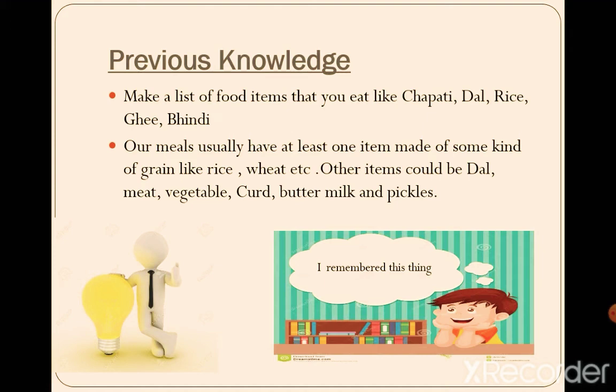Most of the time we see that our meals usually have at least one item made up of some kind of grain, like rice, wheat, etc. Other items could be dal, meat, vegetables, curd, butter, and pickles. I think you have remembered it.